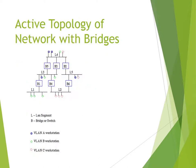Active topology of a network with bridges shows layers L1, L2, and L3 connected through bridges B1, B4, B5, B6. L is equal to LAN segment, B is bridge or switch. VLAN A workstations, VLAN B workstations, and VLAN C workstations are distributed across the topology.